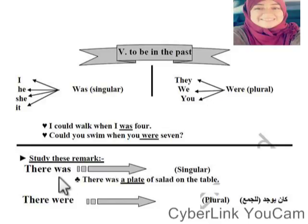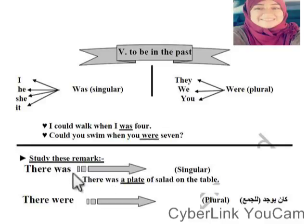Now, about 'there was' and 'there were': 'there was' is used for the singular — anything singular. 'There were' is used for the plural. For example: 'There was a plate of salad on the table' — meaning there is one plate of salad on the table. So 'there was' is for singular and 'there were' is for plural.